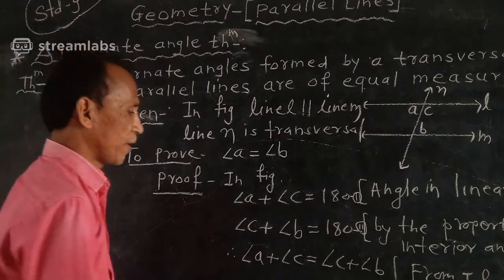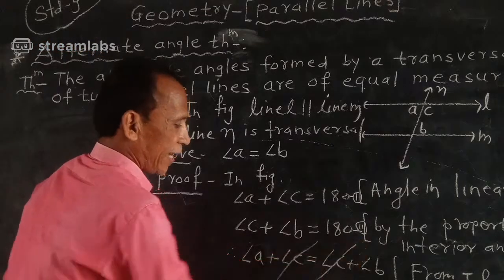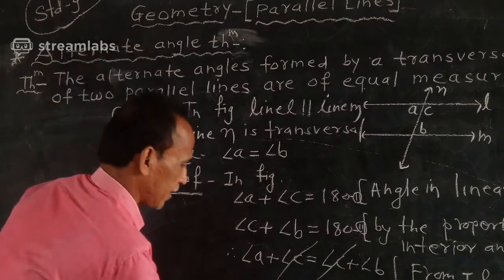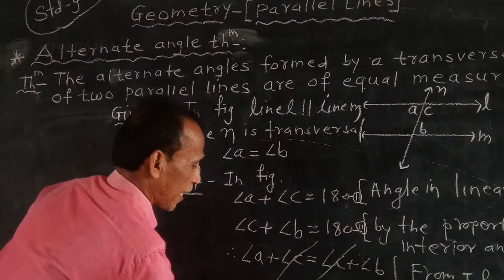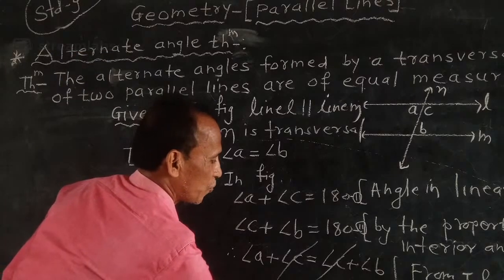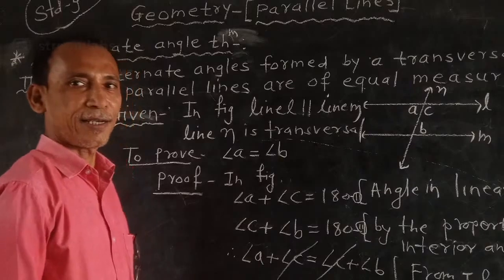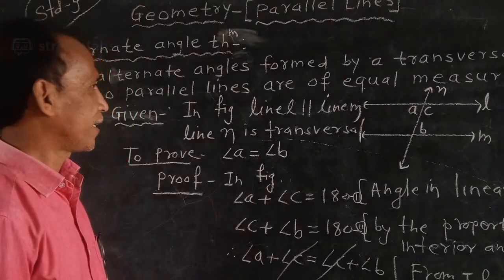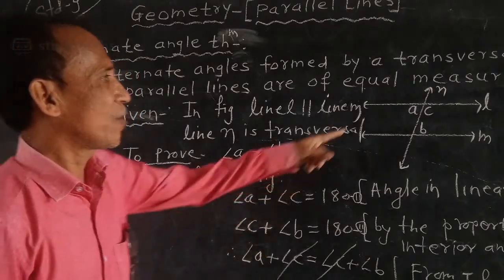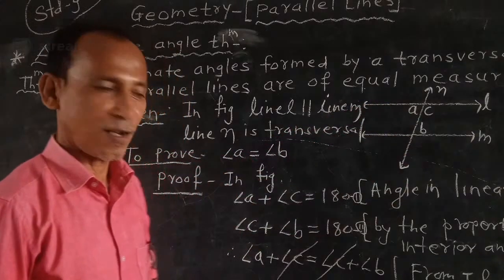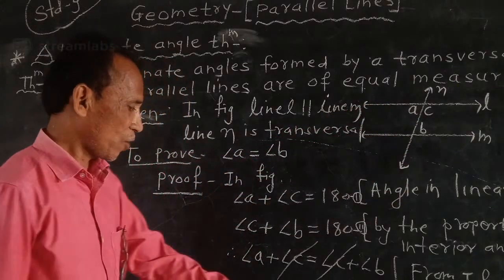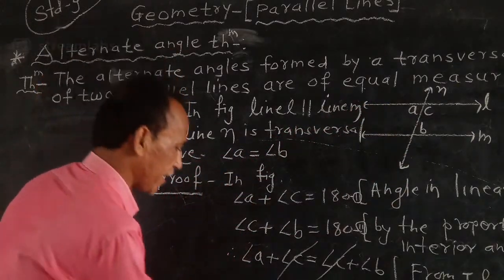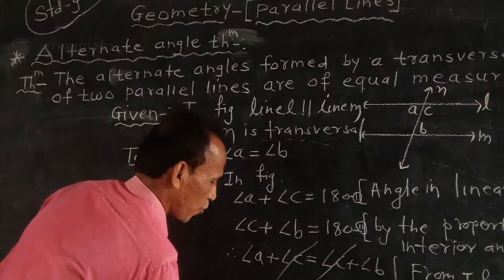Angle C cancels from both sides. Therefore, angle A is equal to angle B. That is, the pair of alternate angles are congruent.